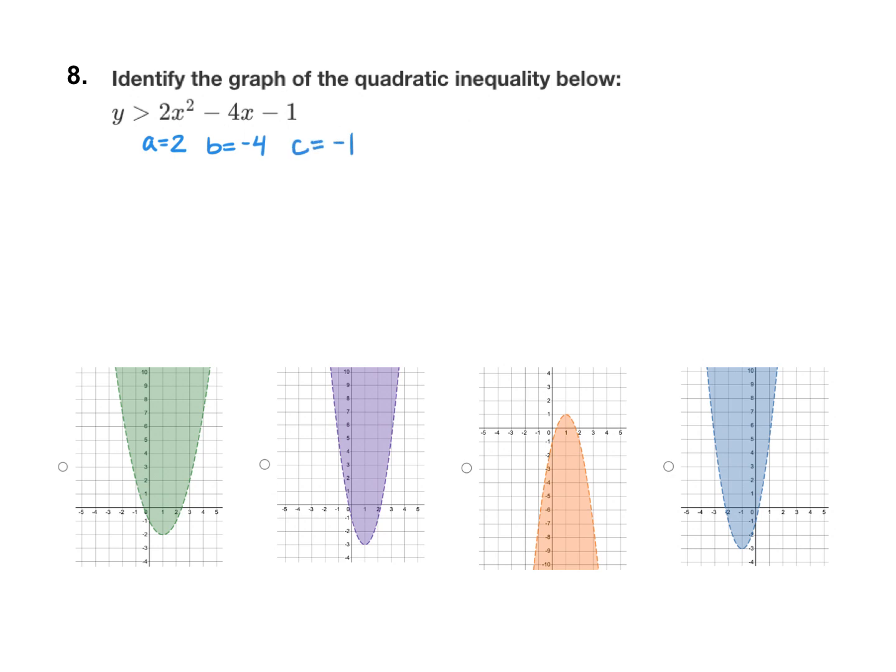So when we have an equation written in standard form, before I actually do anything, I'm just going to see if I might be able to eliminate any choices. So with a being a positive 2, I know that the graph needs to open up. Positive a opens up, so we can eliminate this orange graph right away.